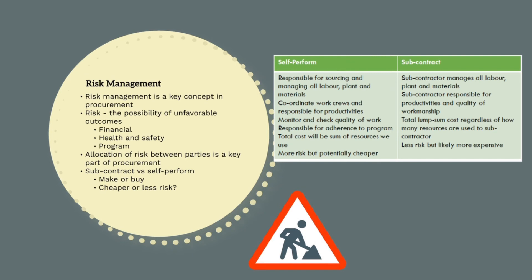One of the most effective ways we manage risk on a construction project is through procurement. Risk can be defined as the possibility of unfavourable outcomes, and risk management is a massive part of construction management — safety, environmental, quality, productivity and community issues, just to name a few. The way we allocate risk and responsibility between parties is a key part of procurement. For example, if we self-perform a package of works, we'd be responsible for sourcing all the labour, plant and materials, coordinating the work crews, and monitoring and controlling the quality of the works. We would hold the productivity, program, cost and quality risks.